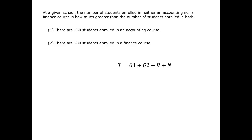Let's move on to the data statements. Statement one gives us one of the G's, but we're still missing the other G and the total number, so we're not going to be able to get N minus B. Statement one is insufficient.